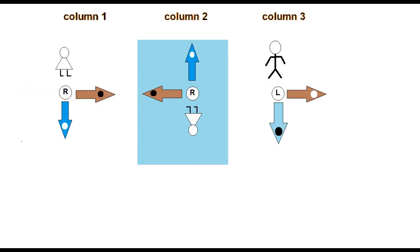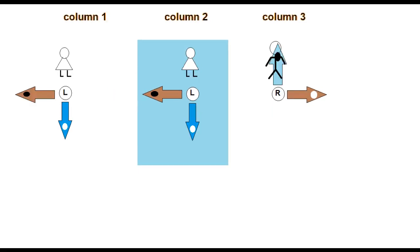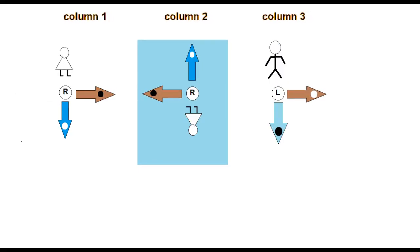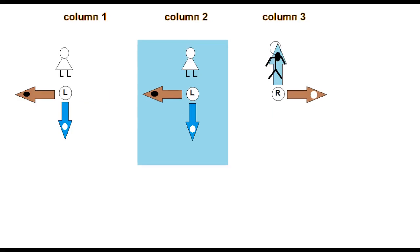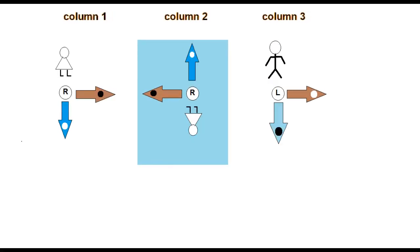Like column 1, column 2 says that Alice would get down along her y were she to re-measure her particle's spin in the y-direction, and that she would get x only 50% of the time were she to measure in the x-direction. According to column 2, this is because she herself is upside down 50% of the time.